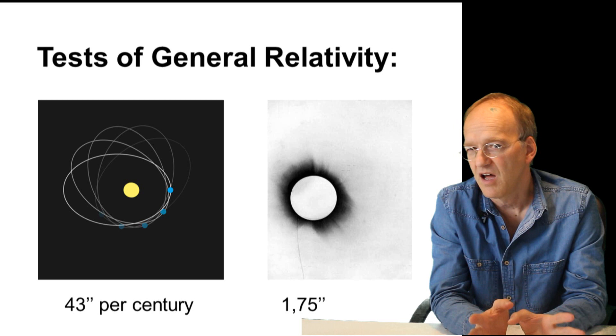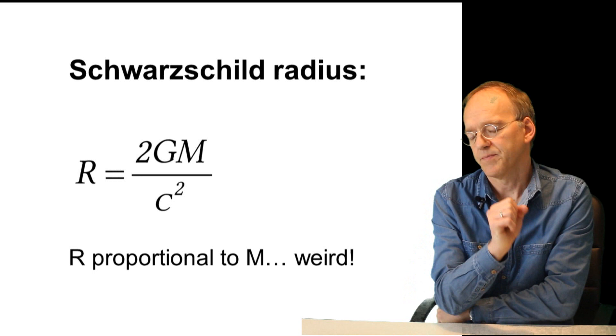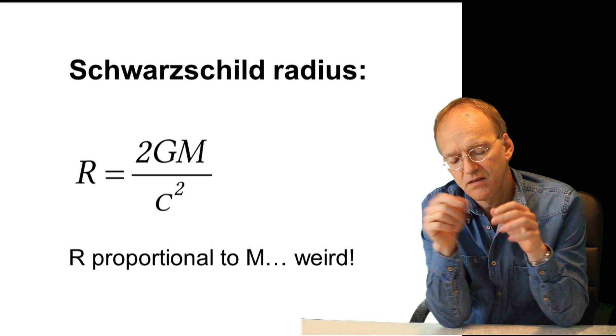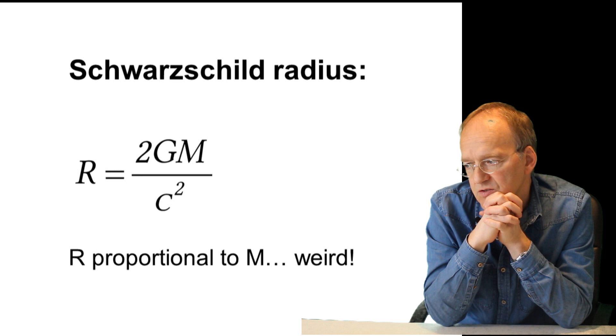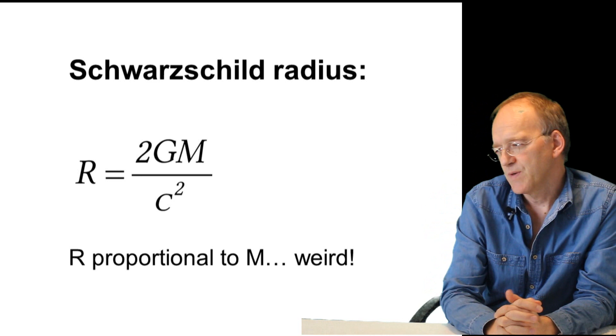All these black hole observations are not like this. What you would need to verify is the size of the Schwarzschild radius. General relativity predicts that there is an event horizon of the black hole, and the Schwarzschild radius from which nothing can escape anymore is R = 2GM/c^2.